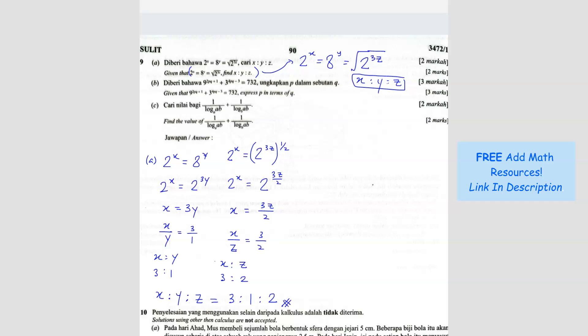Question B. Same thing, I don't think y'all can see, it's too tiny. It's written there: 9 to the power of 2pq plus 1 plus 3 to the power of 4pq minus 3 equals 732. So this is the question. What they want us to do is they want us to express p in terms of q.